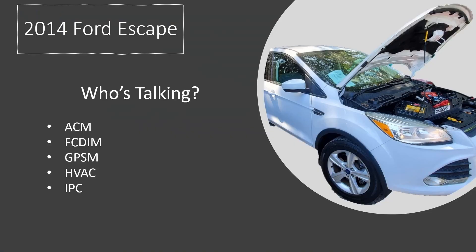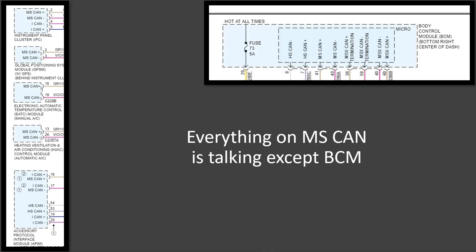There are multiple different networks on a modern Ford vehicle, so let's see which network is operational. These are the five modules that are still communicating. It looks like all the talking modules are on the MS CAN network. The BCM is also on the MS CAN network and it is not communicating, but the BCM is also on the HS CAN — high-speed CAN — and the MSX CAN. So it is likely the BCM only talks to scan tools over the HS CAN and uses the MS CAN for talking to other modules, so this does not necessarily condemn the BCM.